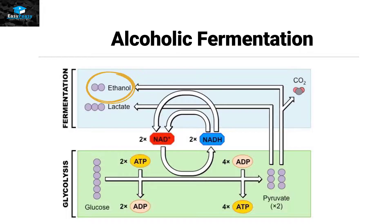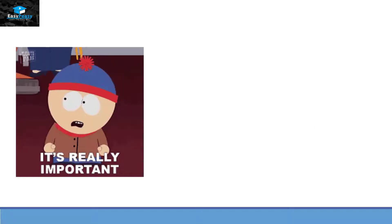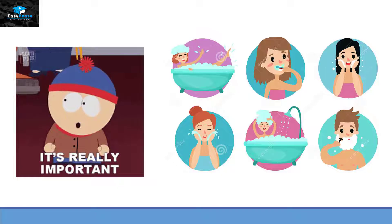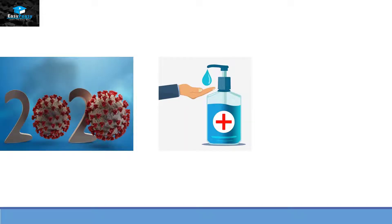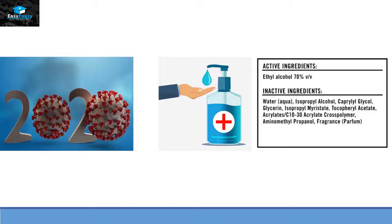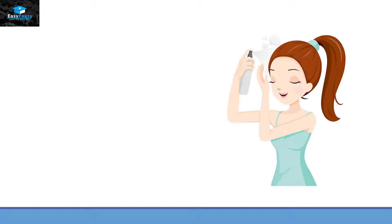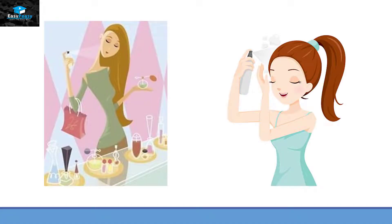The word alcohol is really important in our daily routine life because it is present in so many products that we use every day. For example, the cosmetics we use do have alcohol in them. Especially after 2020, during the time of COVID, we were using hand sanitizers, and those hand sanitizers contain 70% ethyl alcohol. Other than that, the hair sprays and the perfumes we use every day also contain alcohol.